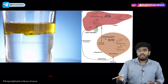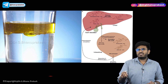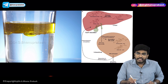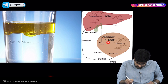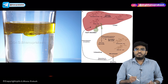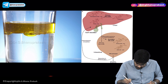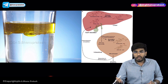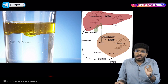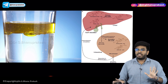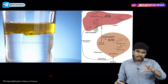Let's talk about bile salts and bile acids. In your liver, cholesterol is present. This cholesterol is converted into primary bile acids. The examples of primary bile acids are chenodeoxycholic acid and cholic acid. These primary bile acids are then converted into secondary bile acids. Examples of secondary bile acids are deoxycholic acid and lithocholic acid. The bile acids are the real ones which help in the process of emulsification, and bile acids are synthesized from cholesterol.